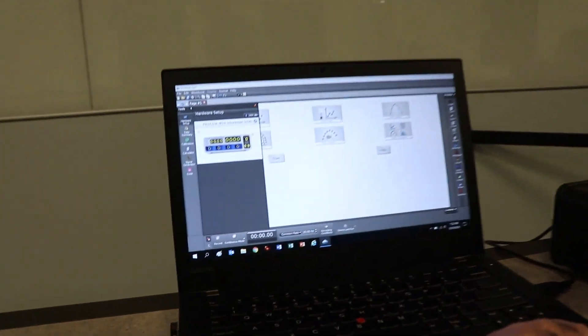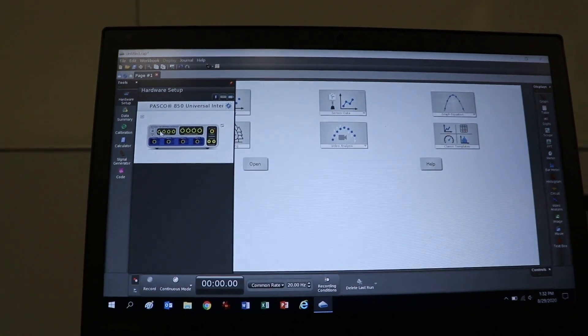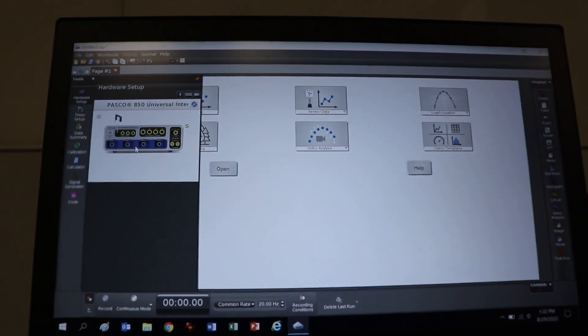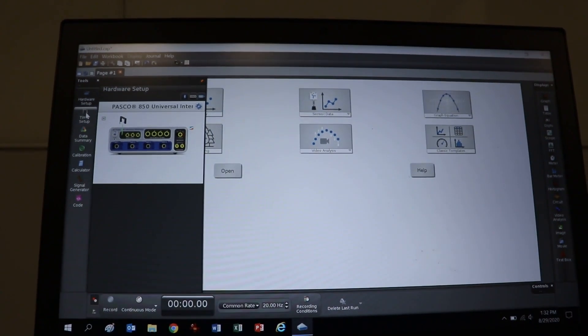So this Capstone right here, I opened it up already. And right over here is where we plugged in the photogate. So we go ahead and say we want a photogate. And then over here, it says photogate timer.